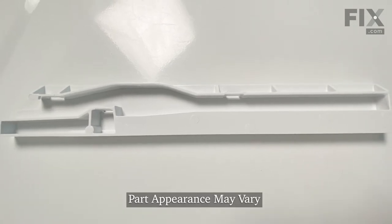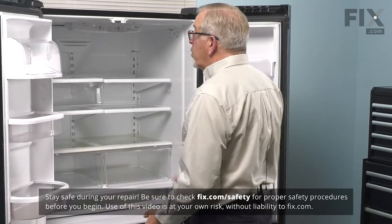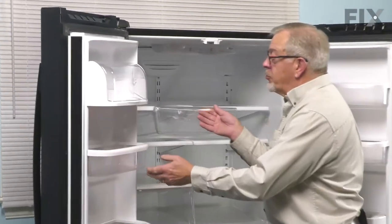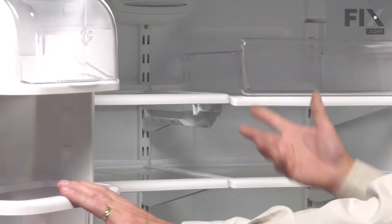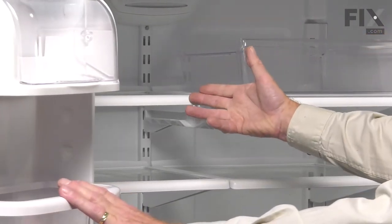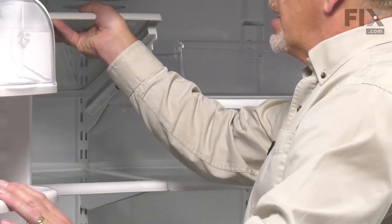Now, to change this part, we're going to begin by opening the refrigerator up. We'll remove the deli drawer and any items that are in it and just set that aside. Then we're going to remove that complete shelf. Simply lift up on the front of it and then lift it away from the brackets on the back wall.